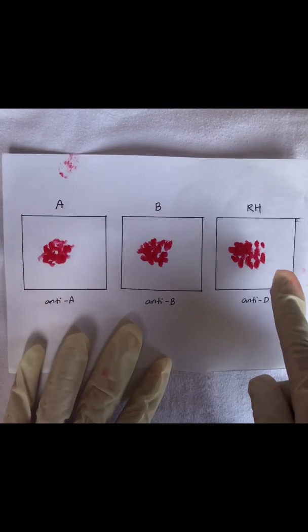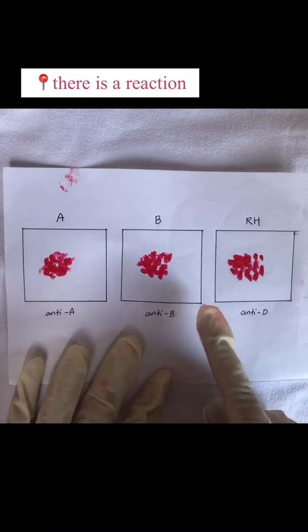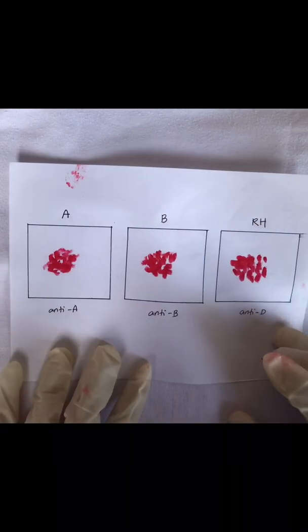A, B, and RH has a result of clumping which means the blood is AB positive.